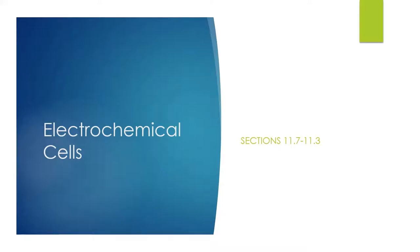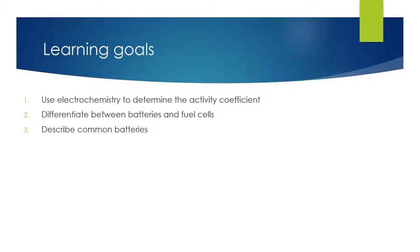Welcome back, students. In the last lecture, we saw how to set up an electrochemical cell and that we could compare the cell EMF, which is our E value, to thermodynamic properties. We'll start by doing the equilibrium constant today. The learning goal for today is to see how we can use electrochemistry to determine the activity coefficient for certain species in solution, and then we're going to talk about batteries and fuel cells.